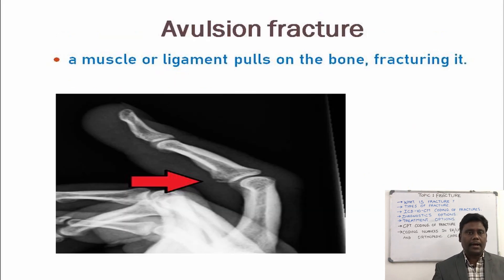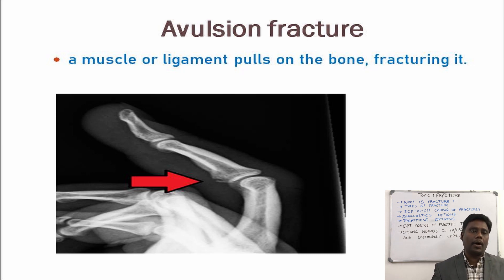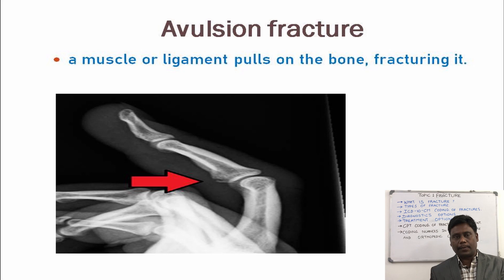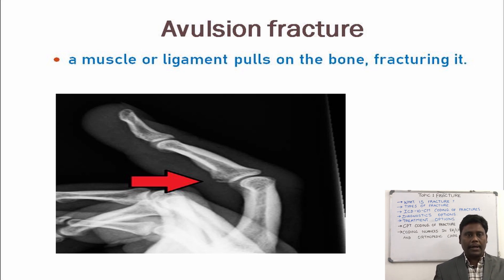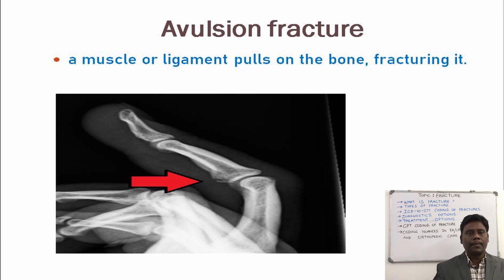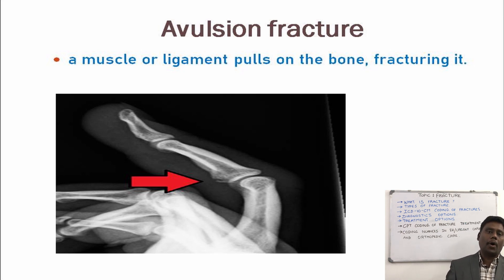Avulsion fracture is the first type. The ligament is the tissue that joins one part of the bone to the other part of the bone in a joint. Due to physical force, this ligament will pull off a piece of the bone from the joint, which causes the avulsion fracture.